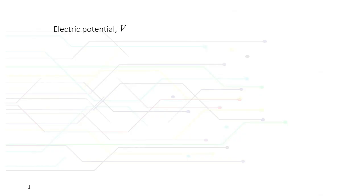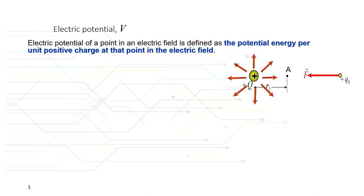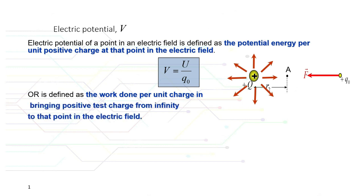Electric potential of a point in an electric field is defined as the potential energy per unit positive charge at that point in the electric field, or sometimes it is also defined as the work done per unit charge in bringing a positive charge from infinity to that point in the electric field.